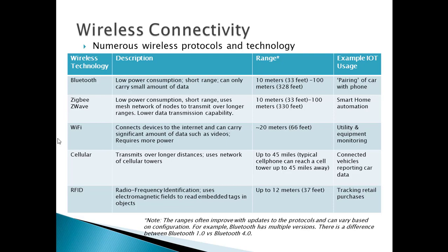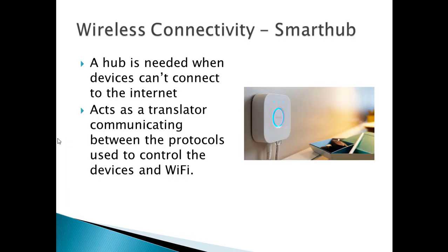There is overlap amongst these protocols in terms of capability. Not all devices are supported by each protocol, so this can lead to issues around interoperability of devices, especially with smart home devices. With the use of IoT for home automation, there is sometimes a need for a smart hub. A hub is needed when devices can't connect to the internet — this is the case with some of the wireless technologies like ZigBee and Z-Wave. The hub, in effect, acts as a translator communicating between the Wi-Fi network and the wireless technologies like ZigBee that connect to the devices.